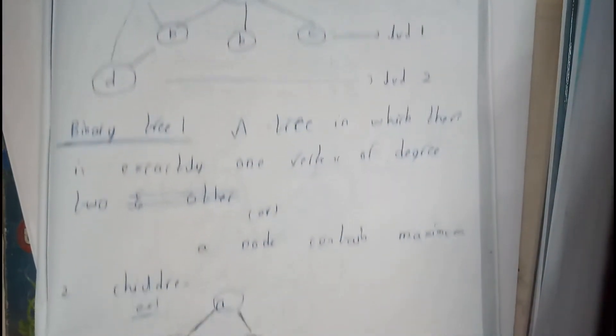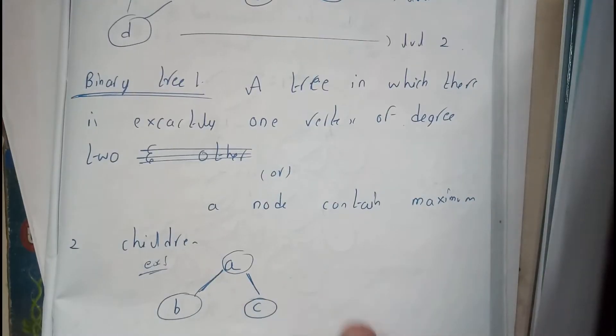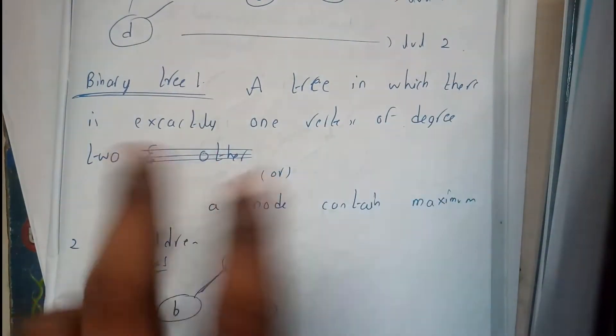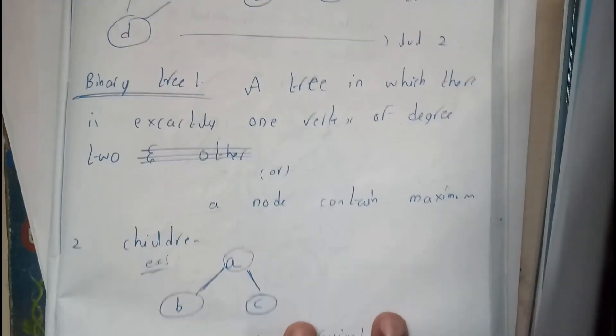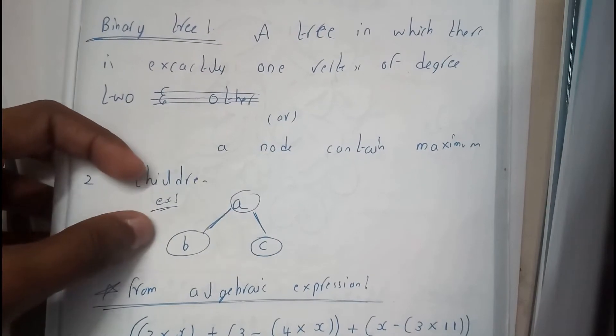Okay, let's go through the binary tree. A binary tree in which there is exactly one vertex of degree two - a node containing maximum two children. In other words, it is something like this.